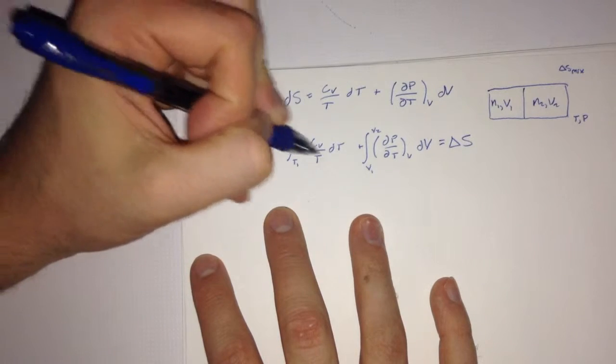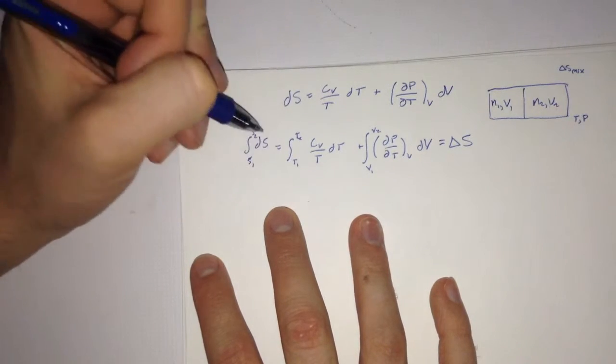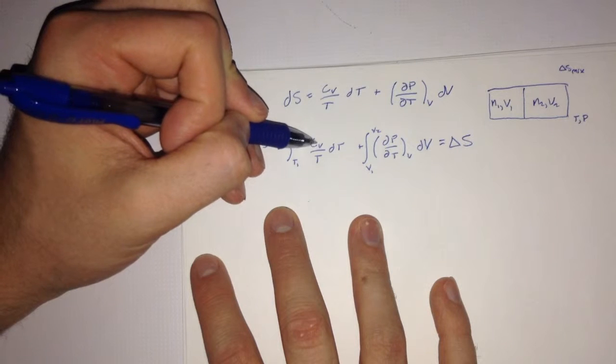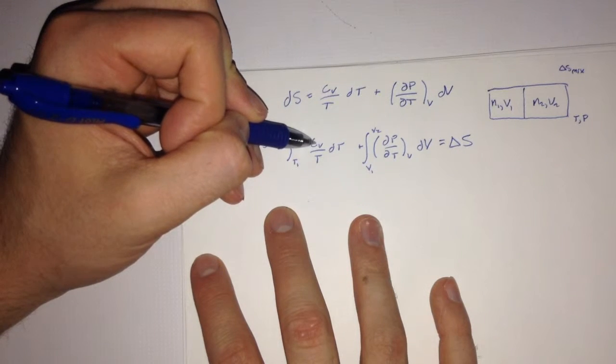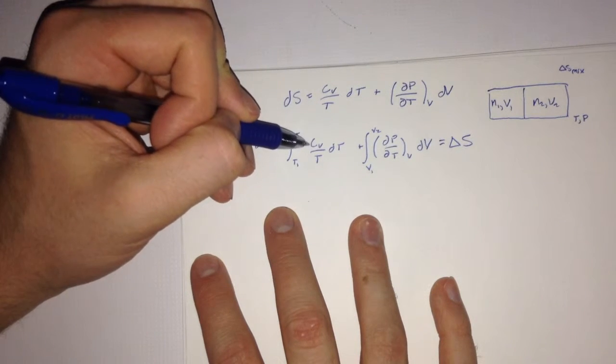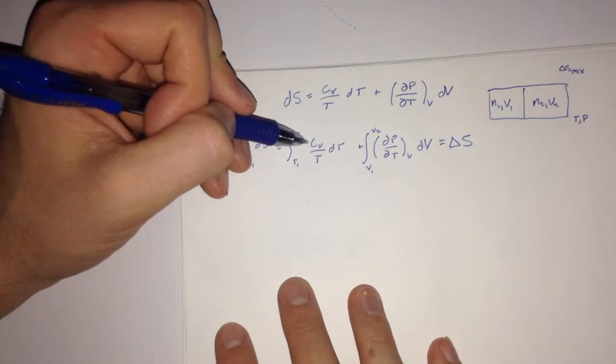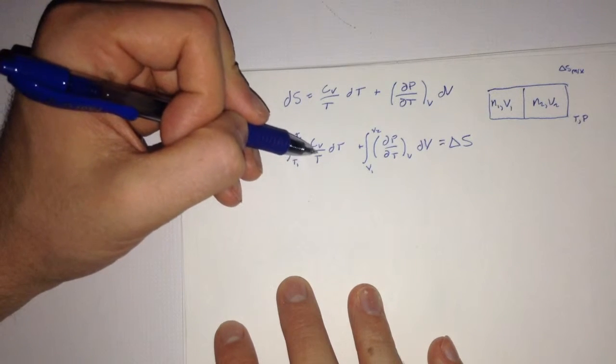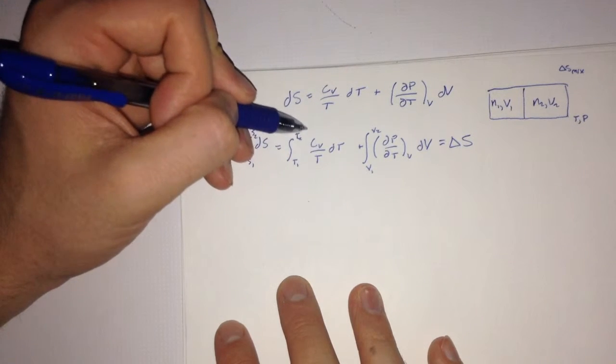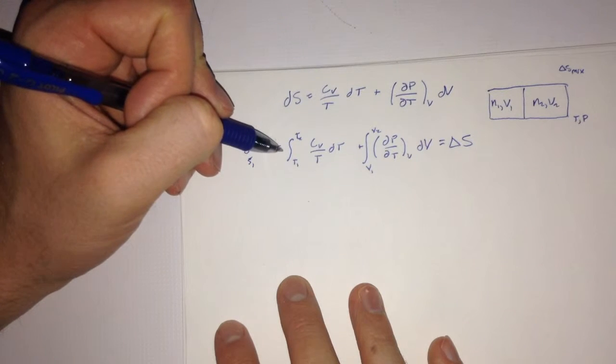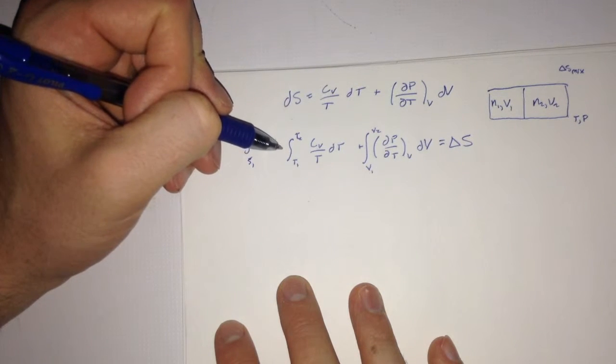So we'll start with the first term right here. And as we notice, this CV isn't changing with respect to anything, so we can assume that to be a constant. And from calc 2, we know that we can just pull the CV, or the constant, out in front of the integral and assess it from there.